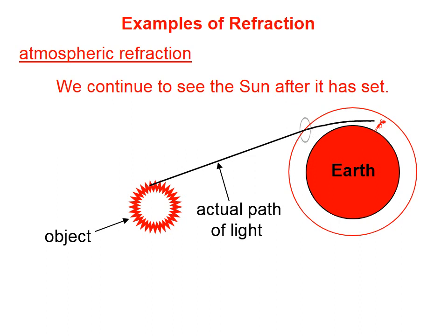So from our perspective, it looks like the sun is right over there, even though it isn't. So we actually continue to see the sun after it's passed below the horizon.